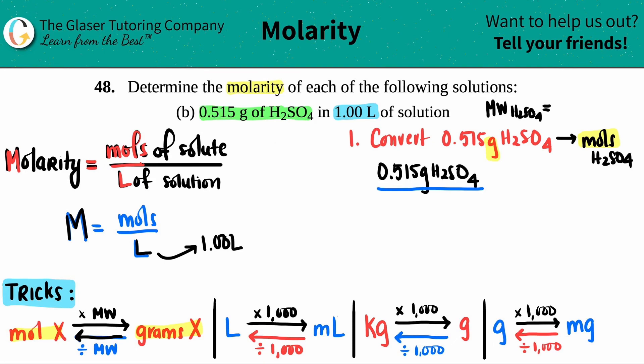Sulfur is 32, and we have four oxygens, so we get a grand total of 98.076. If you got 98, that's fine. Molecular weight is always grams per mole, and that's the number that goes on the bottom.